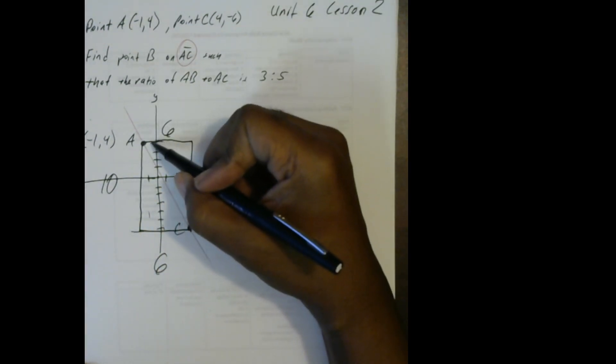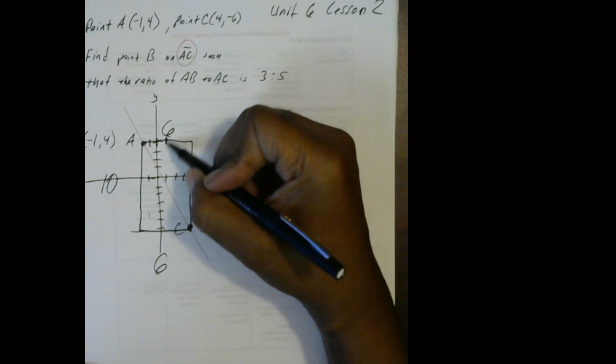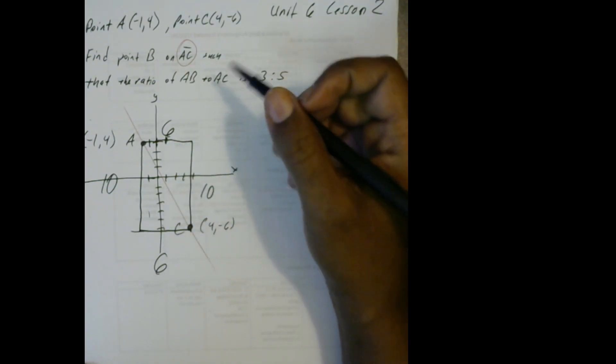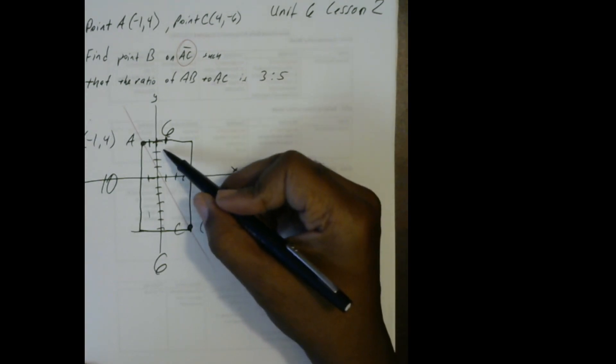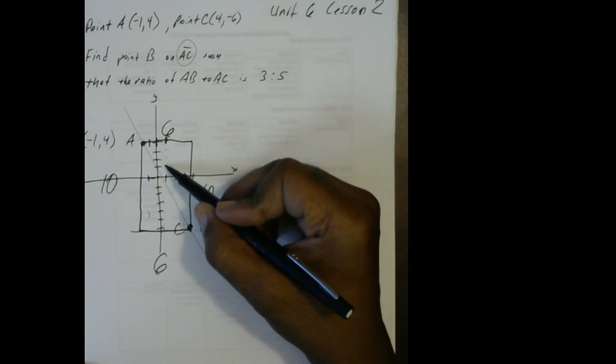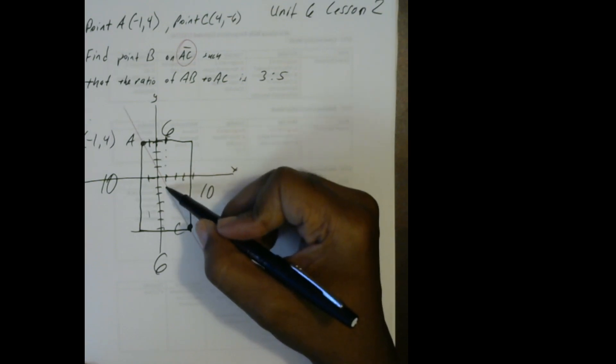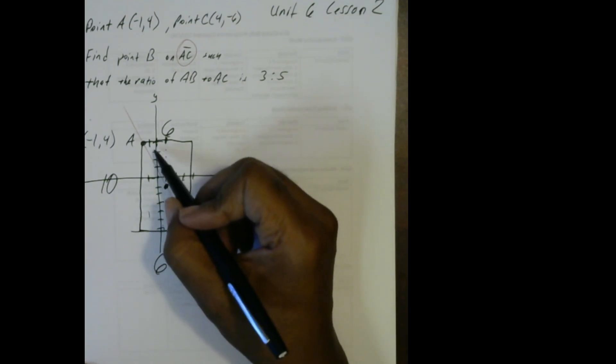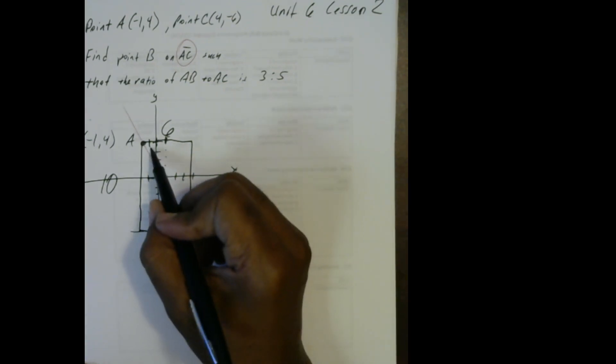So let's go over 3 times. Over 1, 2, 3 times. And then instead of going down 10, we're going to go down 5. So 1, 2, 3, 4, 5. And it takes me right there. So this now is a move of 3 over and 5 down.